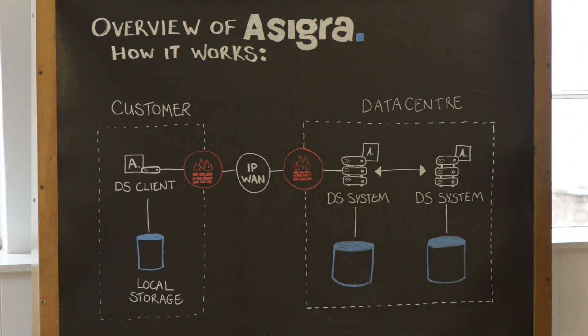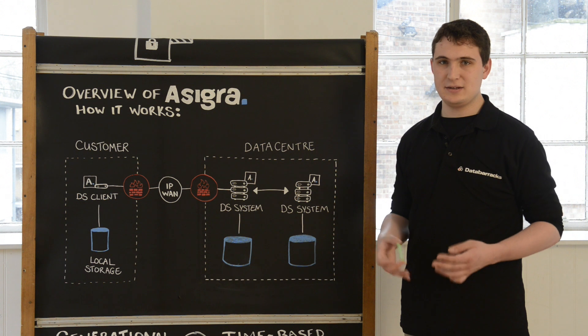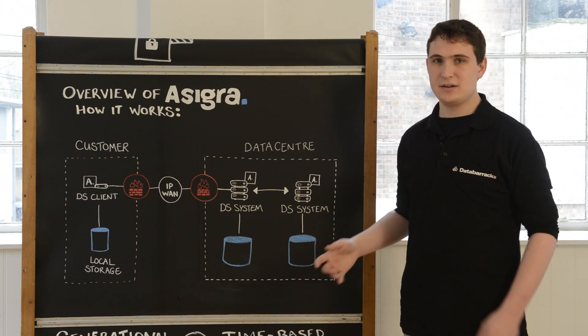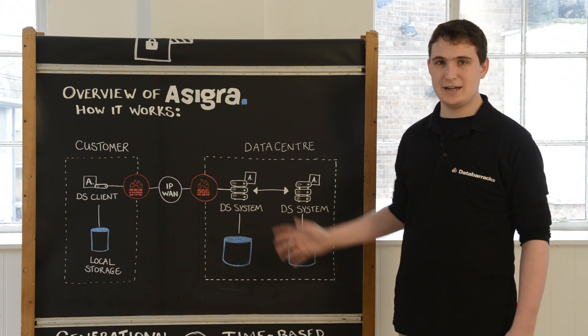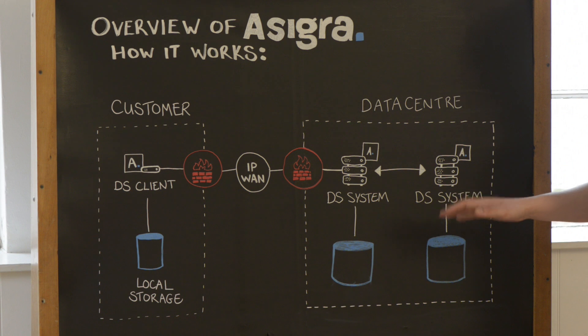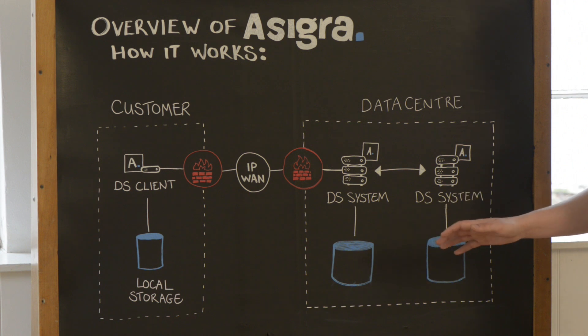Asigra is an agentless backup software that is cloud-orientated or cloud-based, meaning that the backup data is sent across the WAN link in an encrypted format.